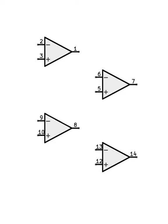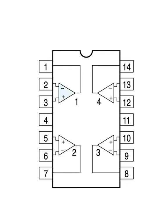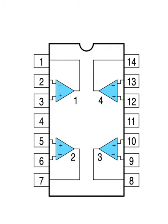Being a quad op-amp chip, the IC package houses four operational amplifiers with identical functionality. Each one has its own inputs and outputs separate from the others.